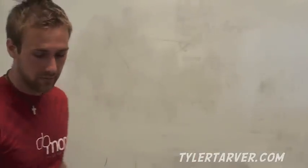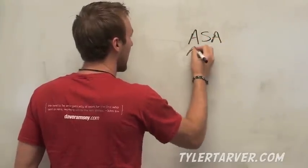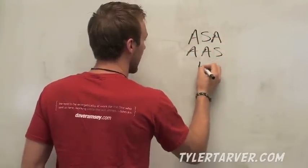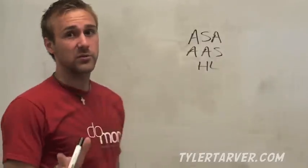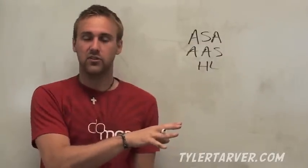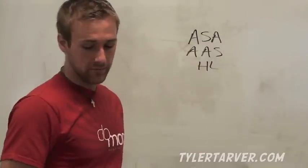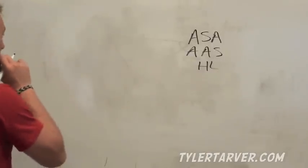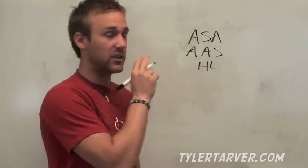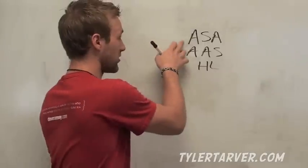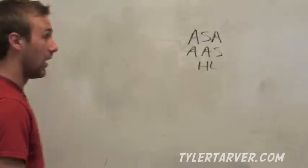This time we're learning ASA, AAS, and HL. Same principle as the last one — if these things match up on this triangle and this triangle, then they're congruent. If you can grasp SSS and SAS from the last chapter, these first two will be real easy, and HL will probably be pretty easy once I explain it.